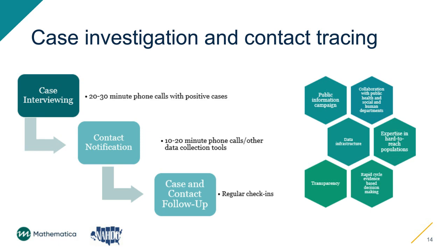As with many public health interventions, the process is straightforward but requires a lot of supplemental support and a well-thought-out plan, starting with a public information campaign as well as strong data structures so that we can link this information with public and social services data and trace these individuals almost in real time — so we do not call them more than once and can reintegrate their healthcare and social needs with available resources. Additionally, there will be populations that are hard to reach, so different strategies like hot-spotting techniques or community organizations may be needed. At the heart of these efforts is transparency and rapid-cycle thinking and decision making to understand the data and inform the public health community for the next stage in epidemic management.